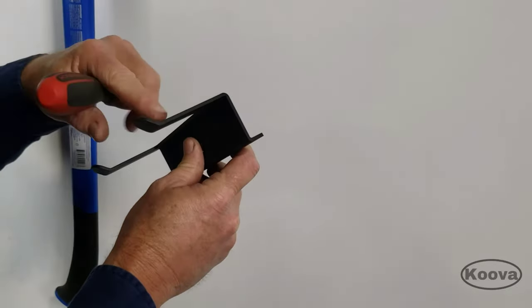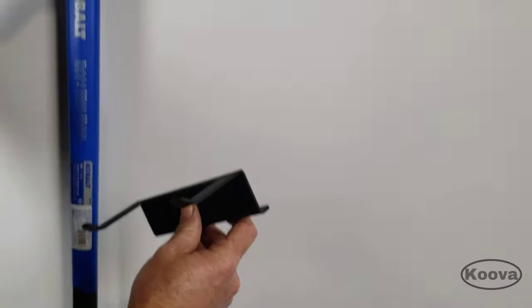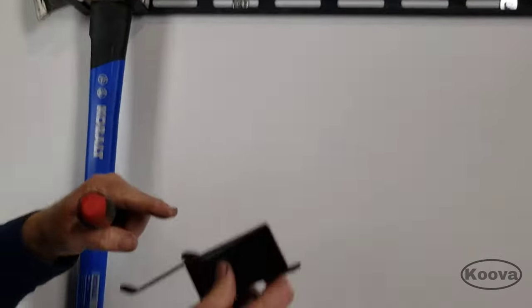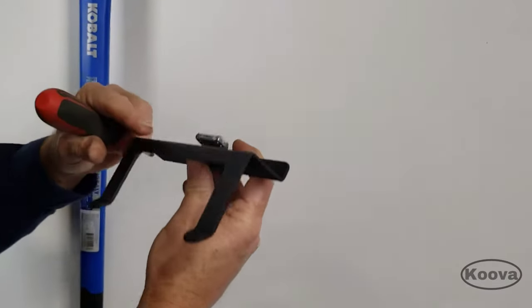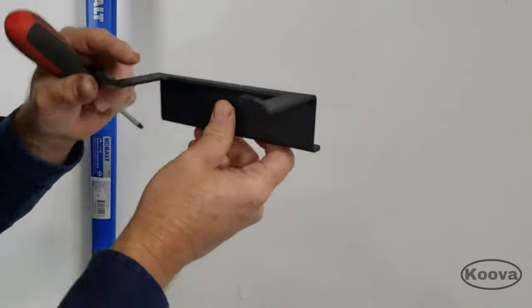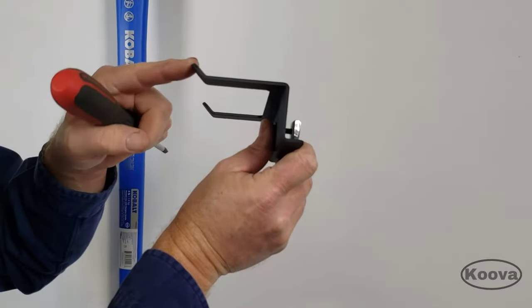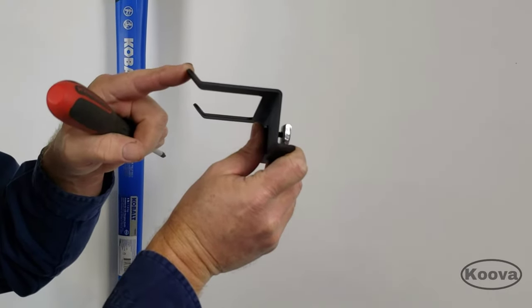Now some of the brackets are over brackets. This is an under bracket, and this is an over bracket. It installs the same way, just kind of upside down, but you can tell by the orientation of these lips on the end which way it should go.